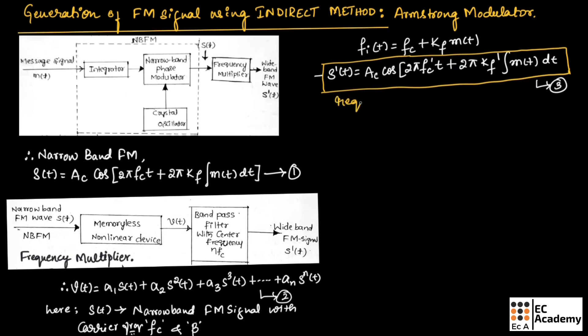Here, fc' = n·fc and kf' = n·kf and beta' = n·beta.